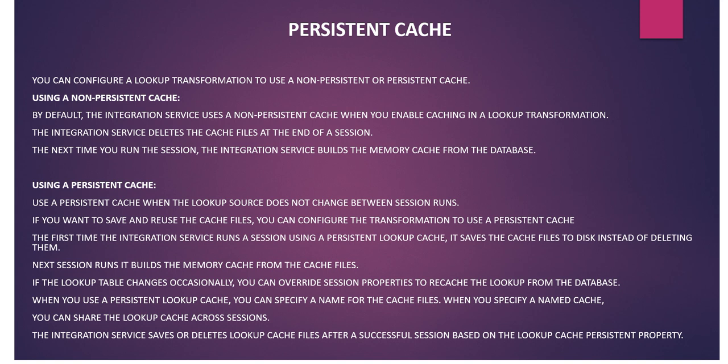In persistent cache, the lookup source does not change between session runs. If you want to save and reuse the cache file, you can configure the transformation to use a persistent cache. The first time the session runs with a persistent lookup cache, it saves the cache files to disk instead of deleting them — so we can reuse it next time. If the lookup table changes occasionally, you can override the session property to re-cache from the database. You can also specify a name for the cache file, which allows you to share the lookup cache across sessions — this is called a shared cache.